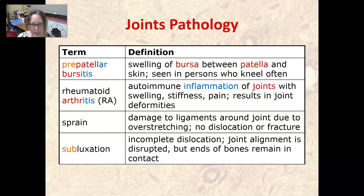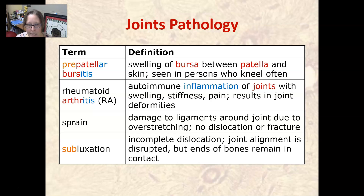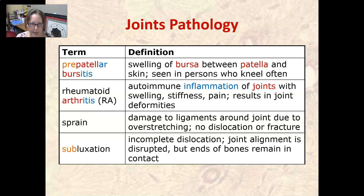Pre-patellar bursitis is swelling of the bursa between the patella, which is the kneecap, and the skin. It is often seen in a person who kneels often. Rheumatoid arthritis, or RA, is an autoimmune inflammation of the joints with swelling, stiffness, and pain, and it results in joint deformities. The autoimmune reaction is attacking and destroying the joint membrane, the cartilage, etc.